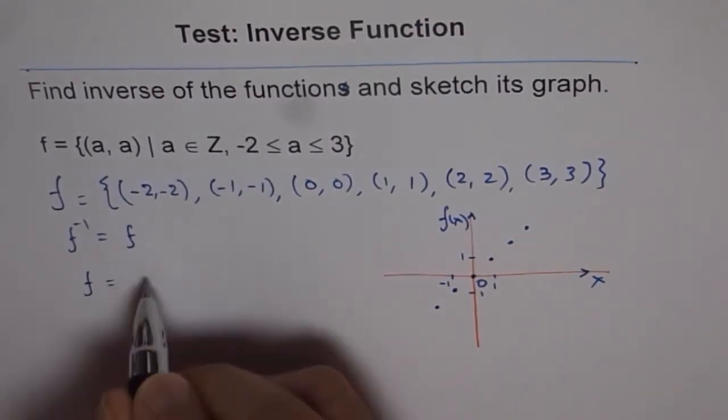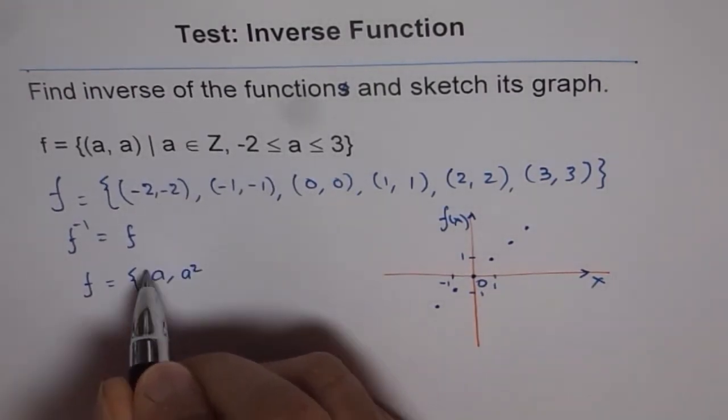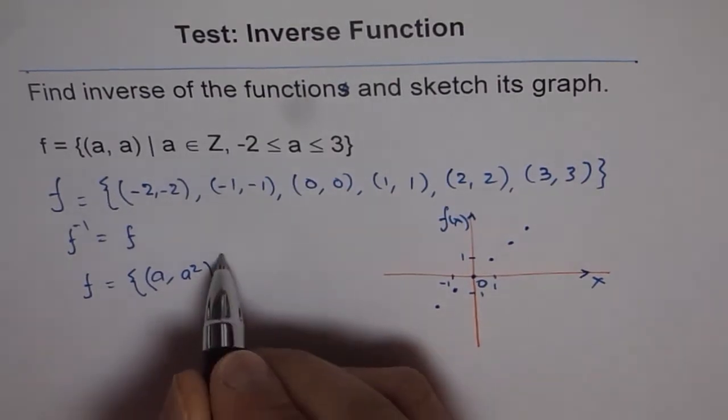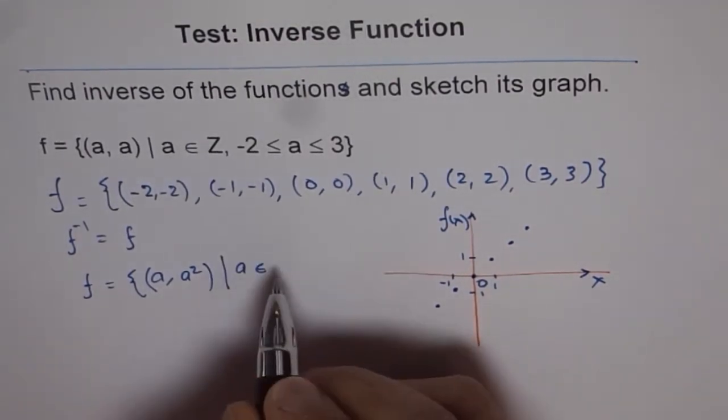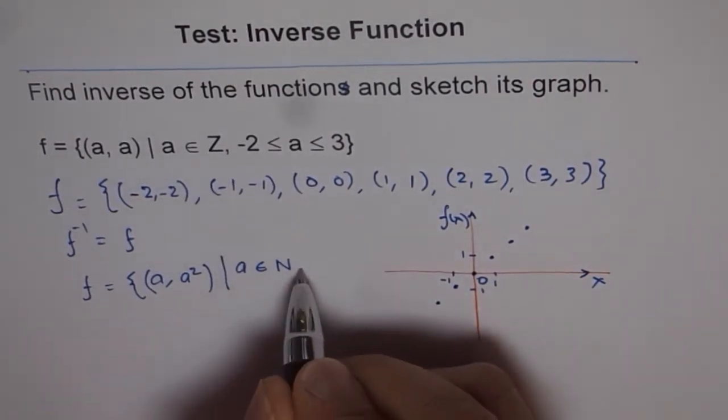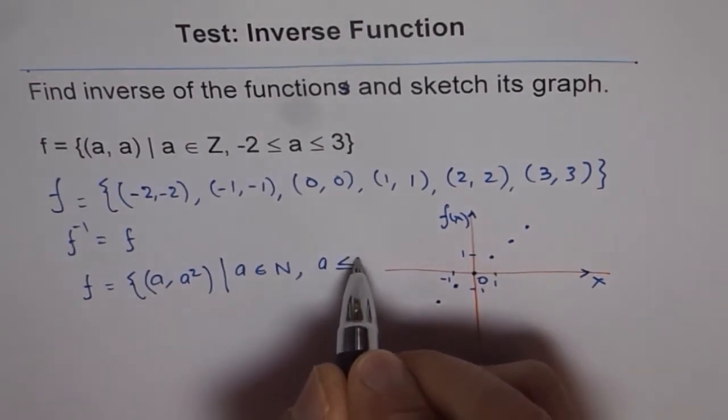At times I could give you a function like this: f = {(a, a²) | a ∈ ℕ}, right? So that is an x² function where a belongs to, let us say, natural numbers,